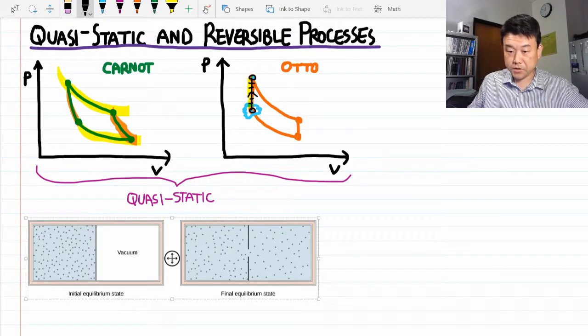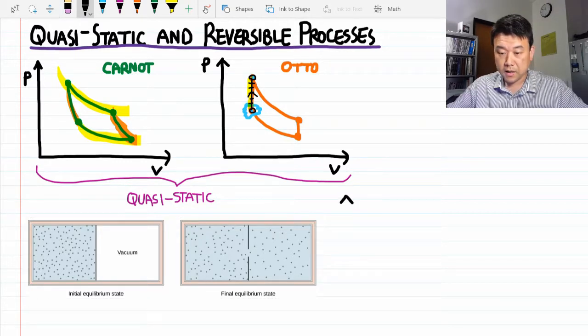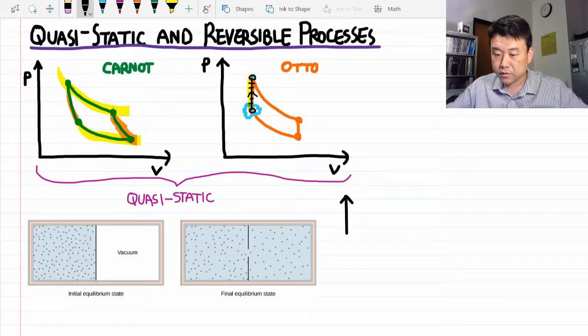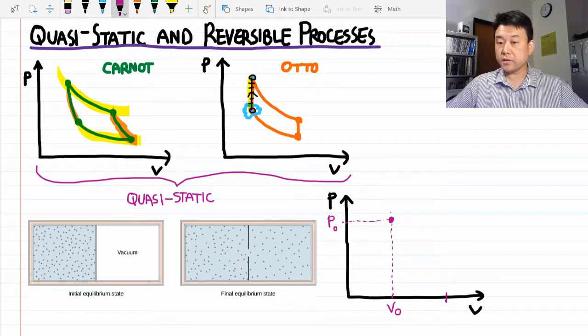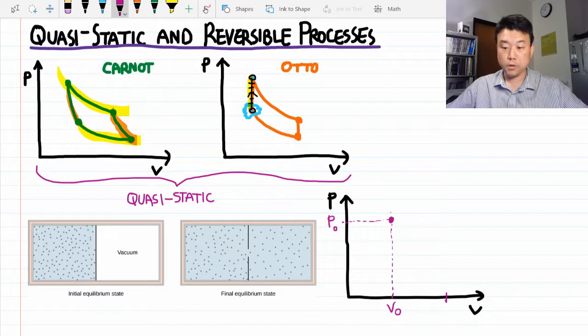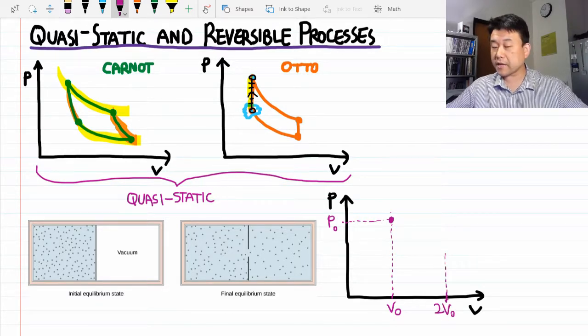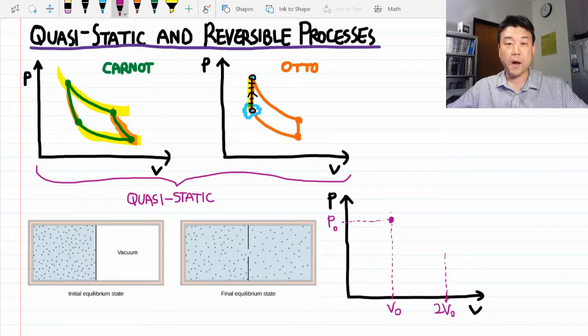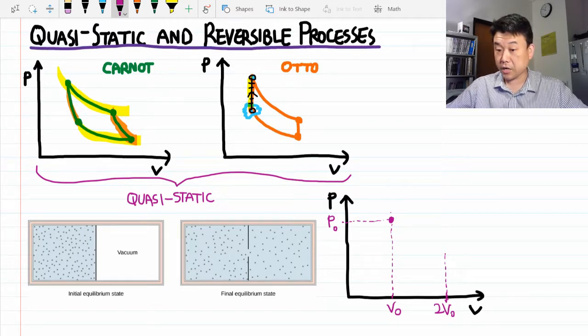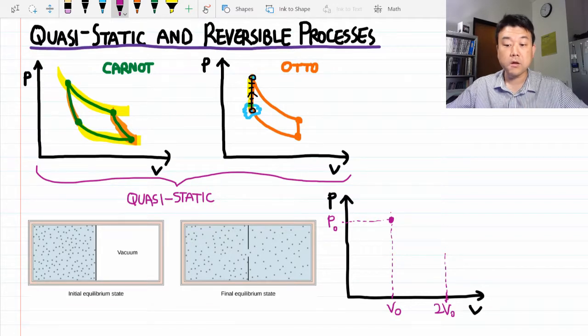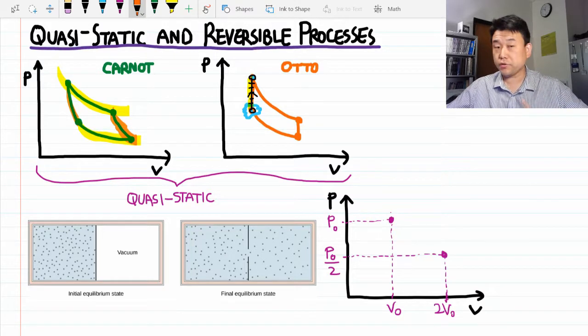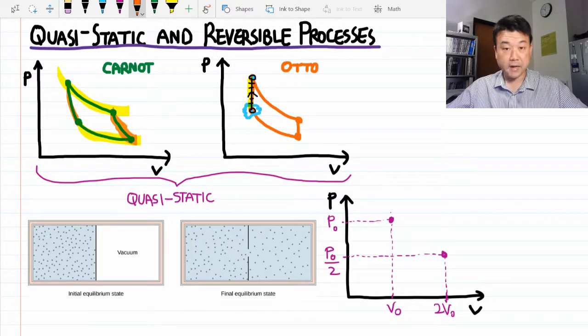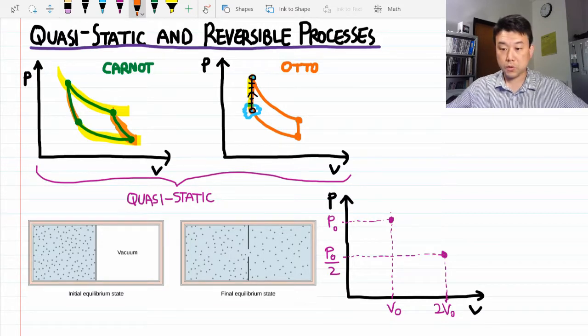So here's the free expansion as illustrated in the textbook. And let me try to illustrate this on a PV diagram. So initially the gas is at some volume and some pressure. With the sudden removal of the partition, the volume of the gas increases. And your textbook does go into careful description of why the temperature of the gas shouldn't change. That means using the ideal gas law, the pressure goes to half of what it was. Now at this point, you might be tempted to say, oh, that means I guess this is an isothermal process.